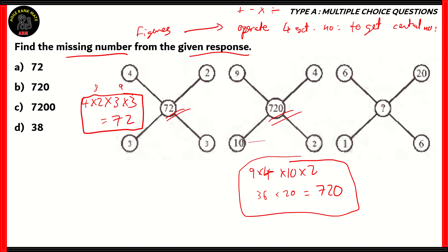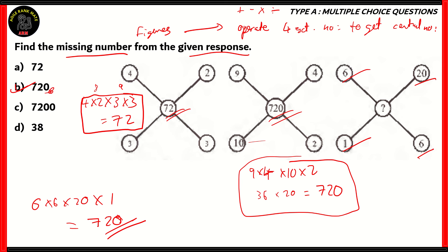To find the missing number represented by the question mark, we multiply the external numbers: 6, 20, 6, and 1. So 6 × 6 × 20 × 1 = 720. Therefore, 720 — option B — turns out to be the right option. Some might be misled by 7200, since 720 already appears in the second figure, but 720 is indeed correct. The relation is that the internal number is the product of all four external numbers.